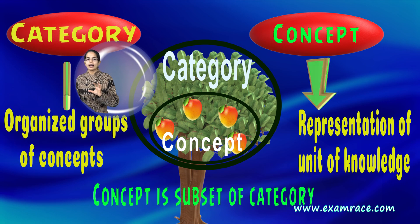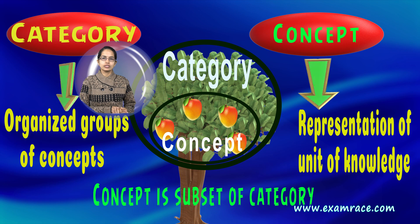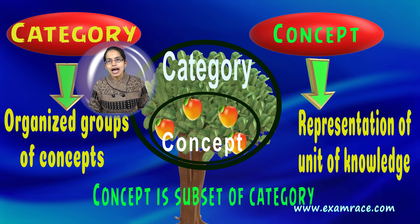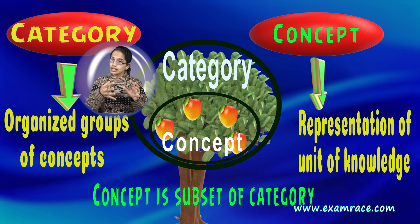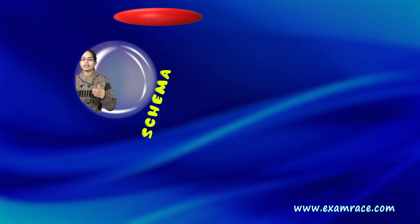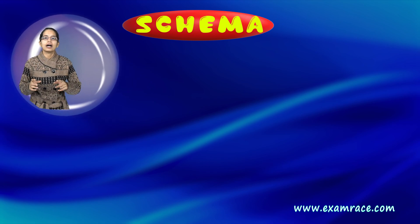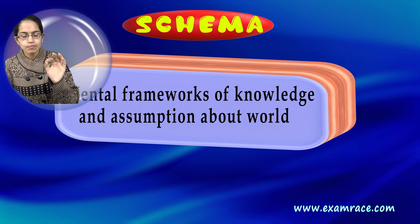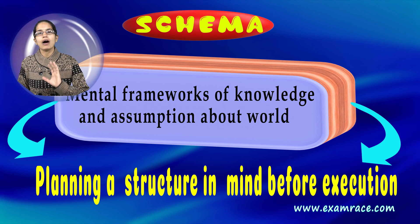Let's start with a very simple example. I have the fruits. Now what is this concept of fruit? Fruit is a category under which I have a concept of, let's say, mangoes.